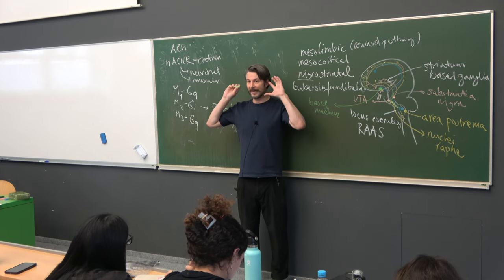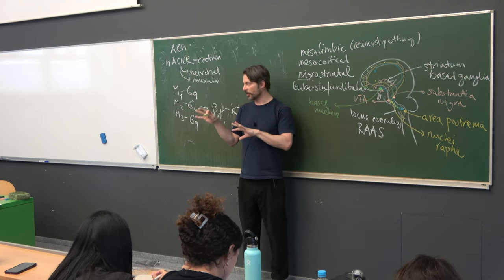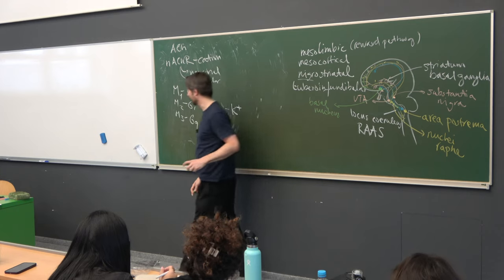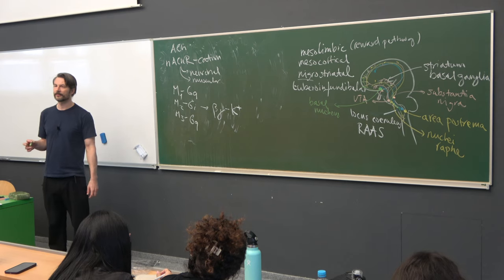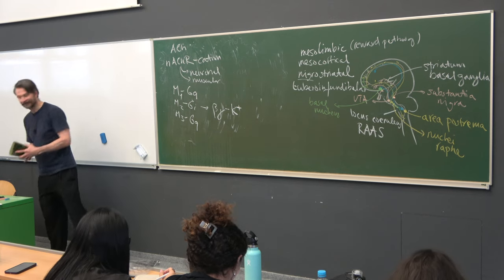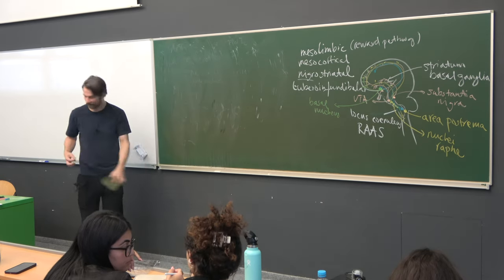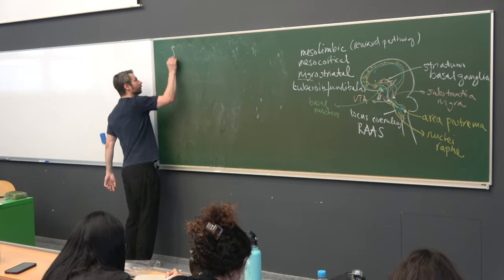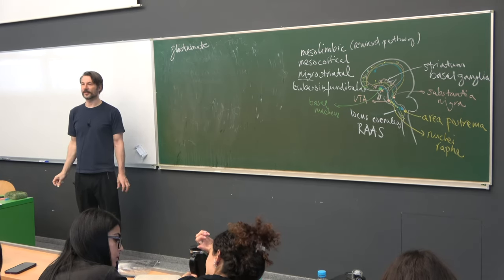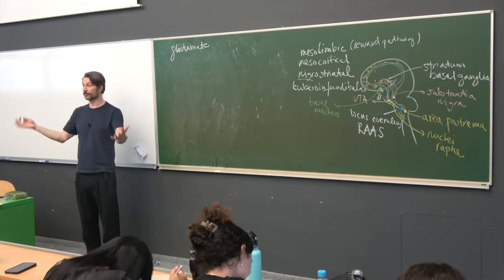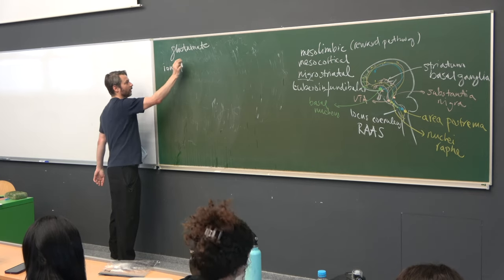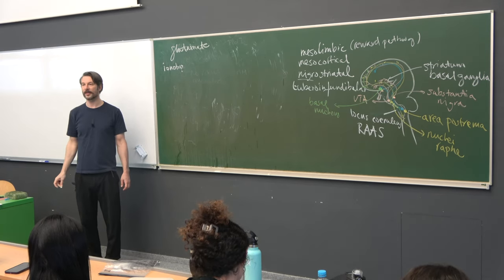Acetylcholine is also important for the basal ganglia — those computers that compute movement — and is an important player in Parkinson's disease. All acetylcholine receptor types, including nicotinic receptors, can be found in the brain. The basal nucleus and its cholinergic projections into the brain are important for memory.